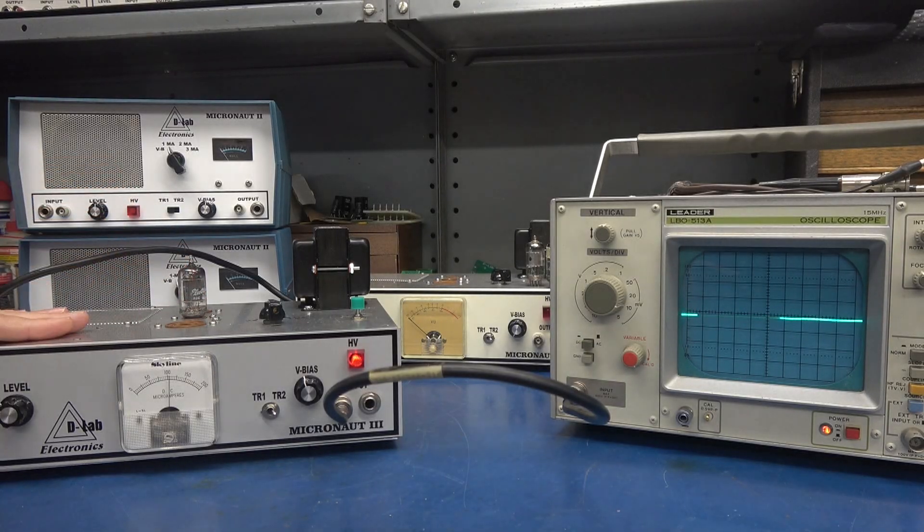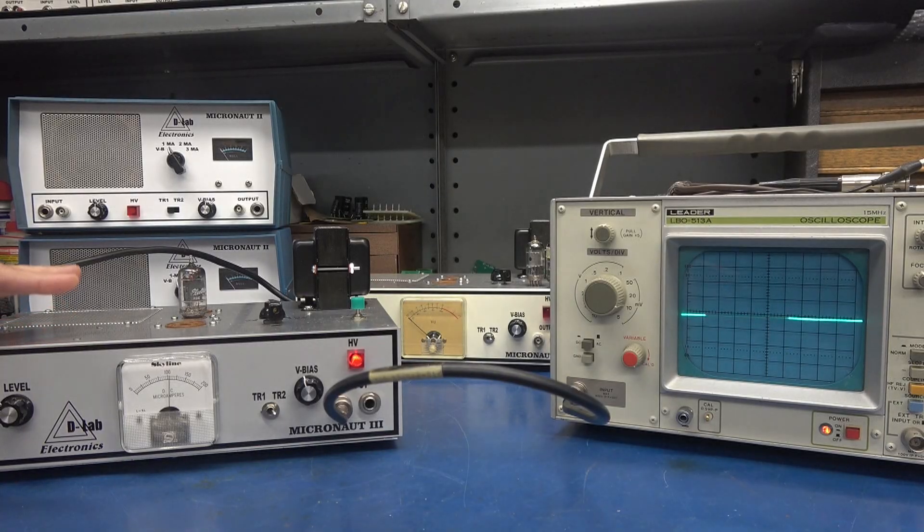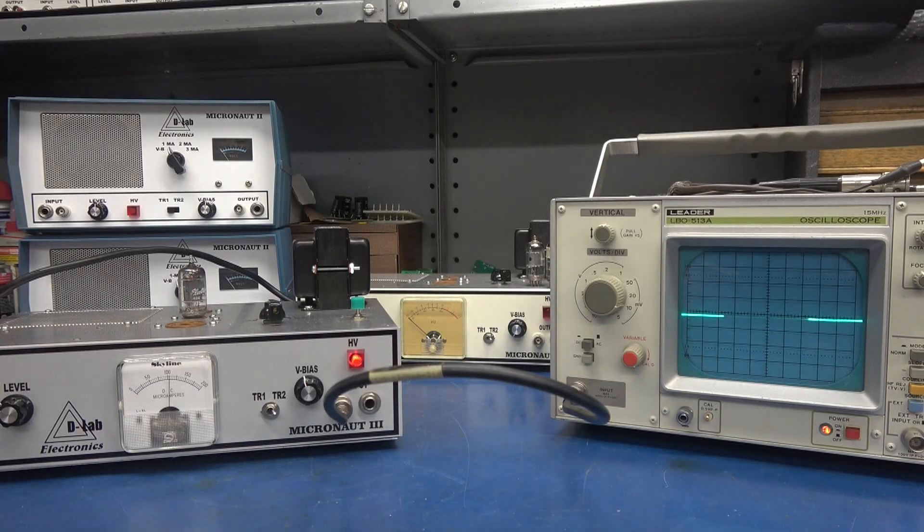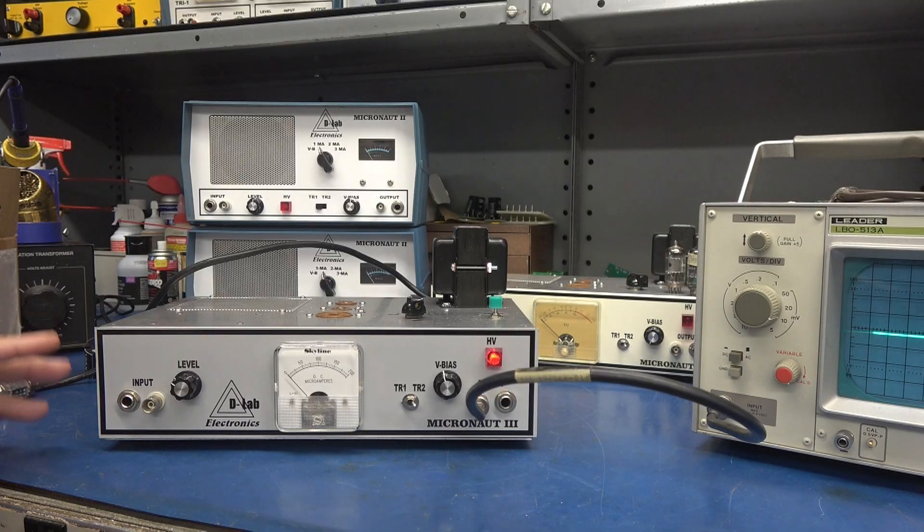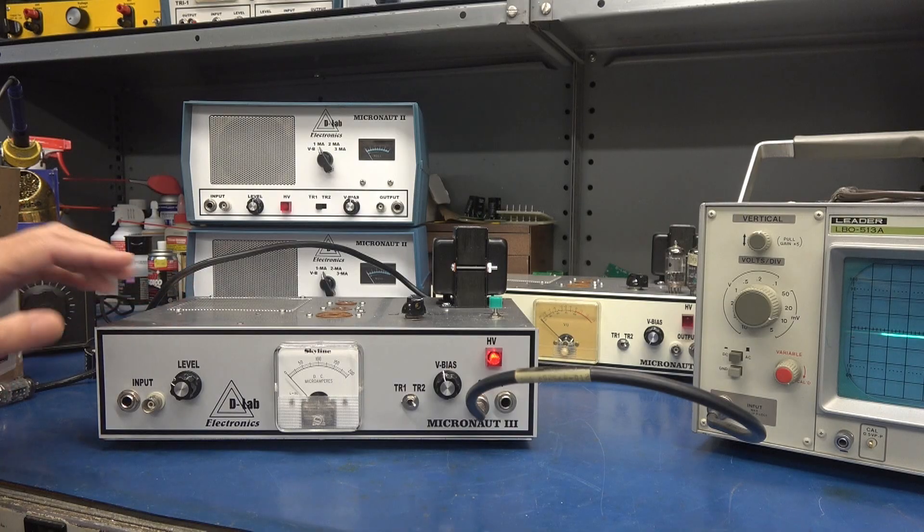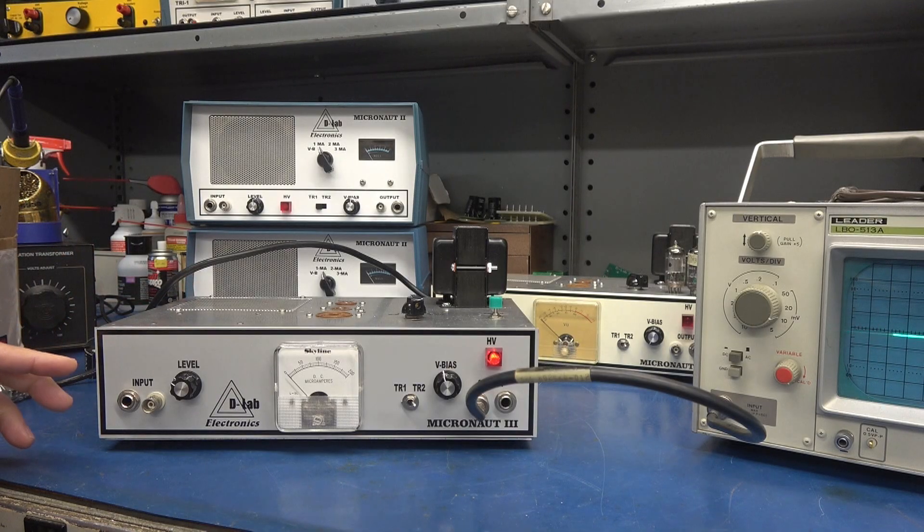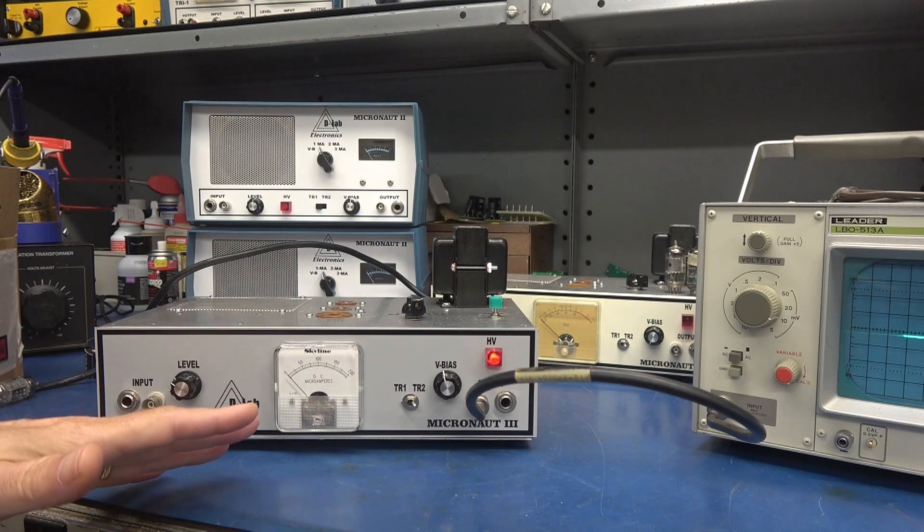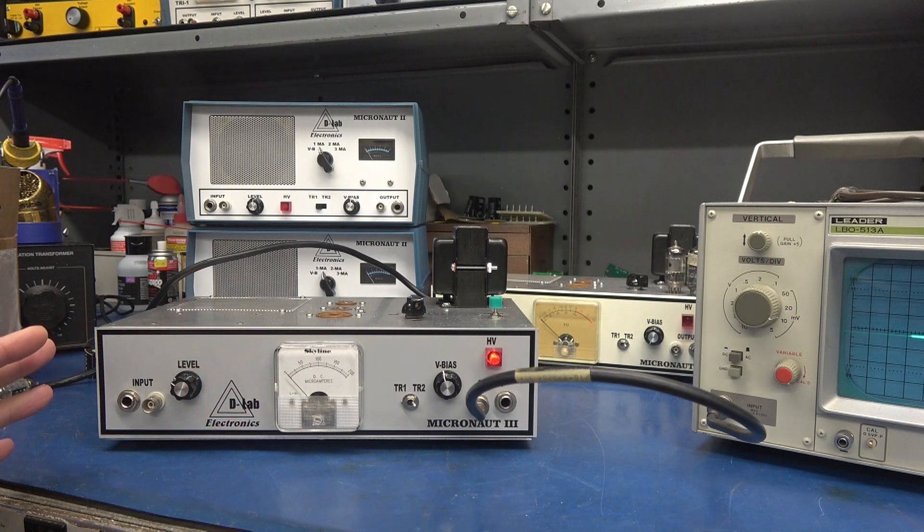So that's the purpose of the Micronauts. It gives you a benchtop way to evaluate your tubes without tube rolling in your amp and wearing out your sockets. So the Micronauts have an input feature, so you could also plug in a preamp tube and either drive it with the audio generator or your guitar. And then take the output side, go to an amp, and you can actually play these tubes.